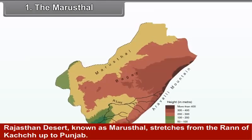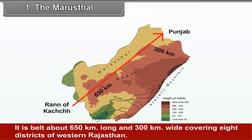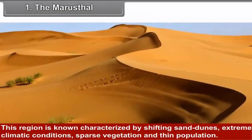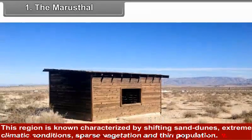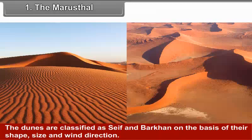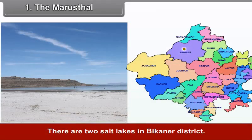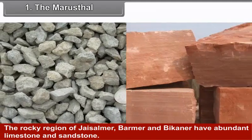The Marustal. The Rajasthan desert known as Marustal stretches from the Ran of Kutch up to Punjab. It is a belt about 650 km long and 300 km wide covering 8 districts of western Rajasthan. This region is characterized by shifting sand dunes, extreme climatic conditions, sparse vegetation and thin population. The dunes are classified as Saif and Barkhan on the basis of their shape, size and wind direction. These dunes move according to wind direction and vegetable cover. There are two salt lakes in Bikaner district. The rocky region of Jaisalmer, Barmar and Bikaner has abundant limestone and sandstone.